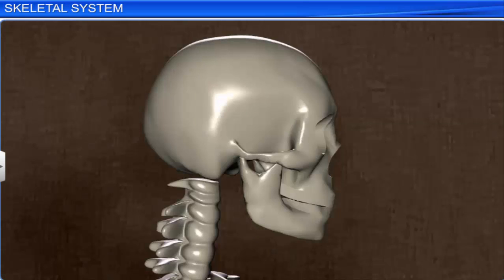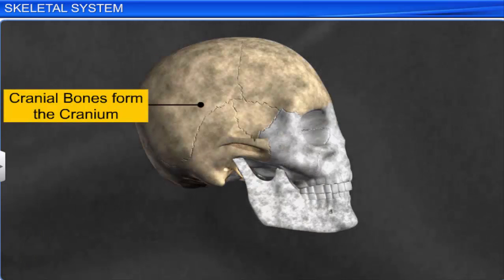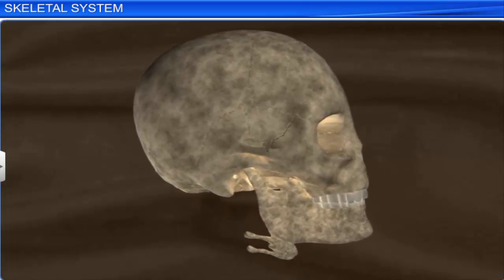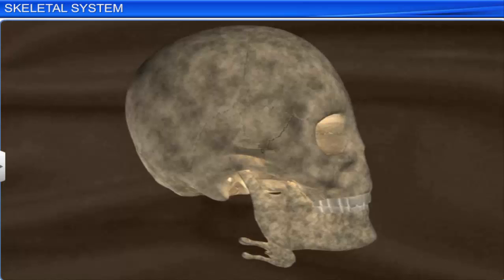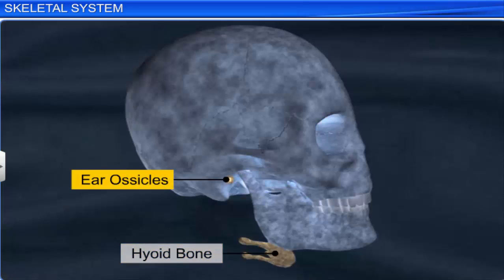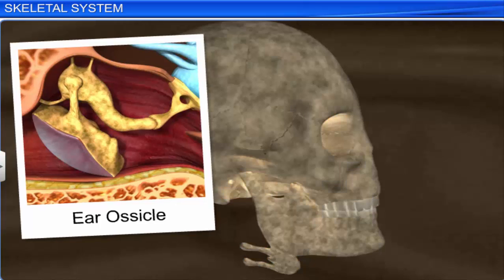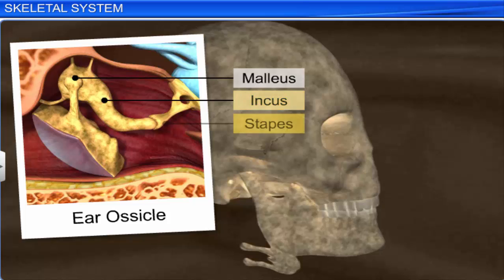The skull has two sets of bones: cranial and facial. The eight cranial bones fuse to form a cranium or brain box, while the fourteen facial bones form the face. The skull also includes a U-shaped hyoid bone and two ear ossicles, one on either side. Each ear ossicle consists of three tiny bones: malleus, incus, and stapes.